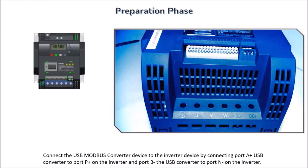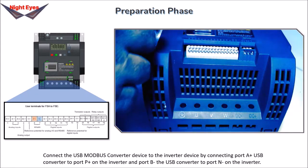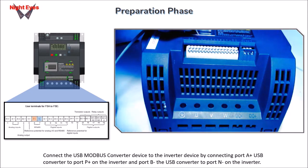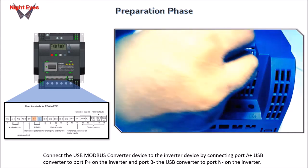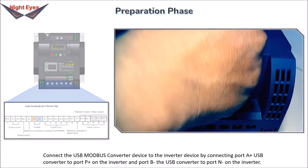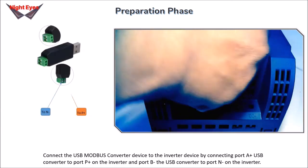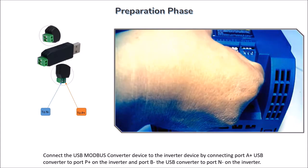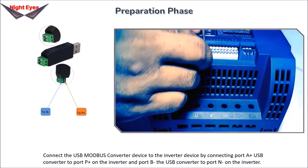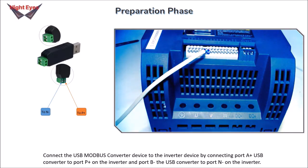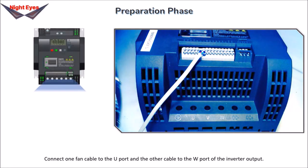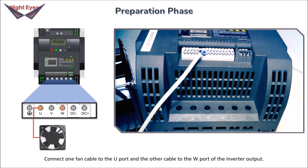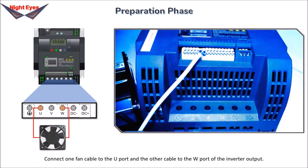The preparatory steps are: connect the USB Modbus Converter device to the inverter by connecting port A+ of the USB converter to port P+ on the inverter, and port B- of the USB converter to port N- on the inverter. Connect one fan cable to the U-port and the other cable to the W-port of the inverter output.